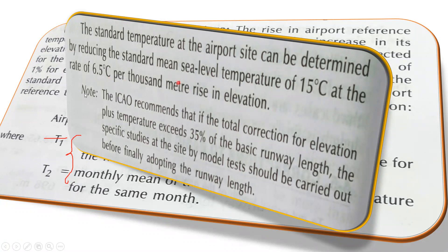ICAO recommends that the total correction for elevation plus temperature should not exceed 35% of the basic runway length. If it does exceed 35%, specific studies at the site through model testing should be carried out before finally adopting the runway length.